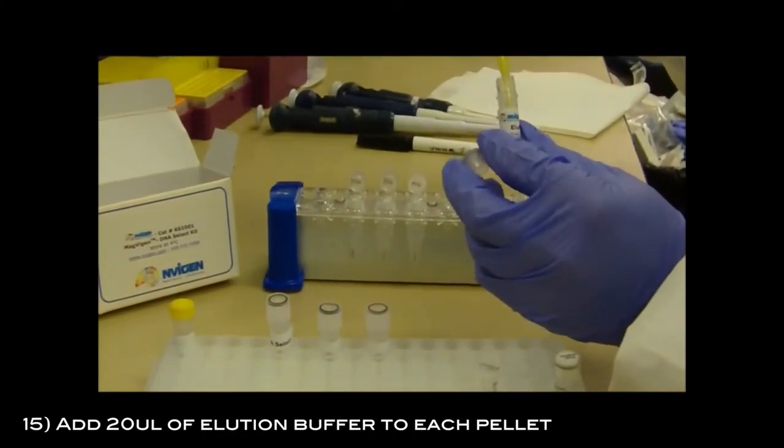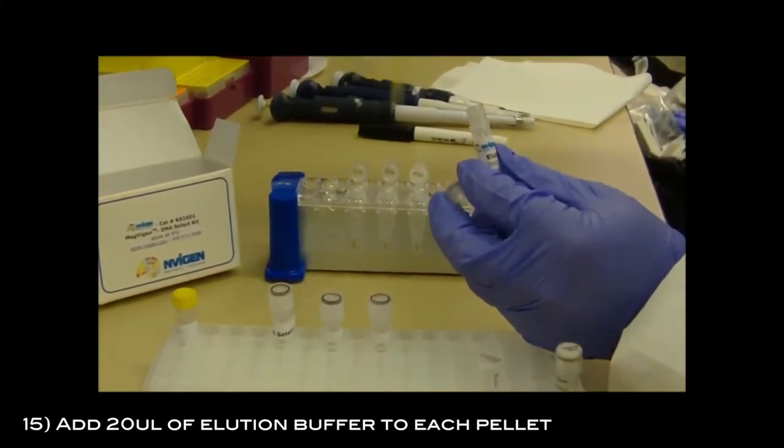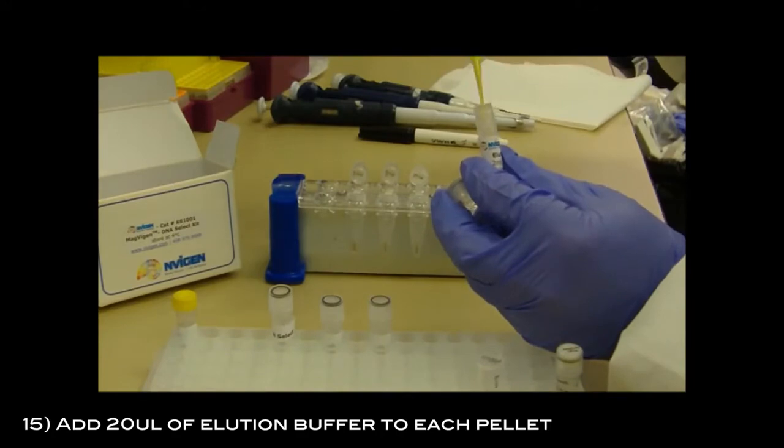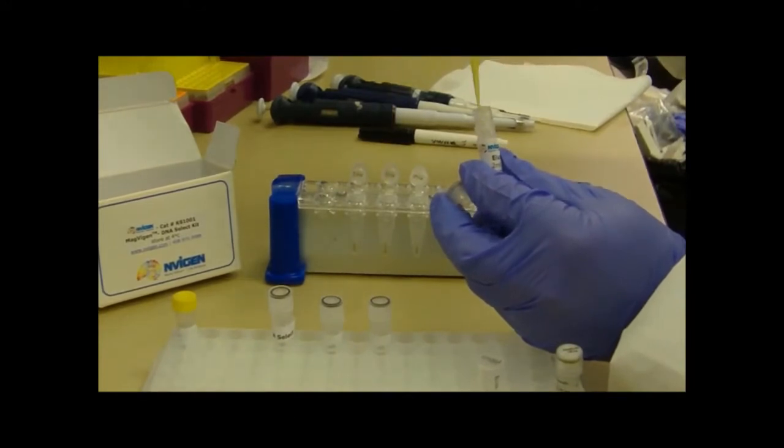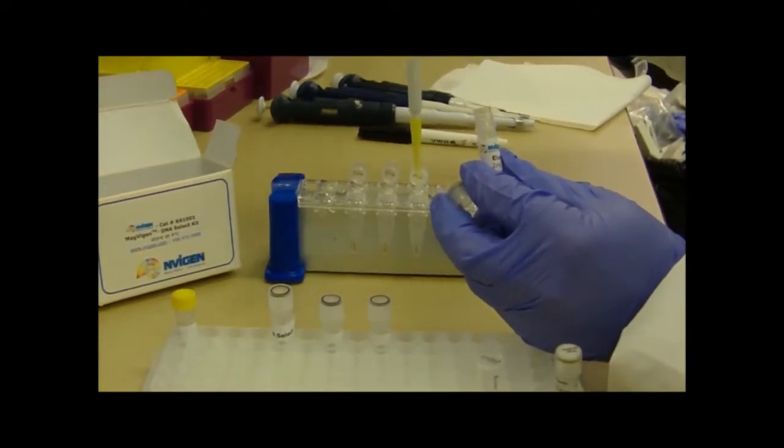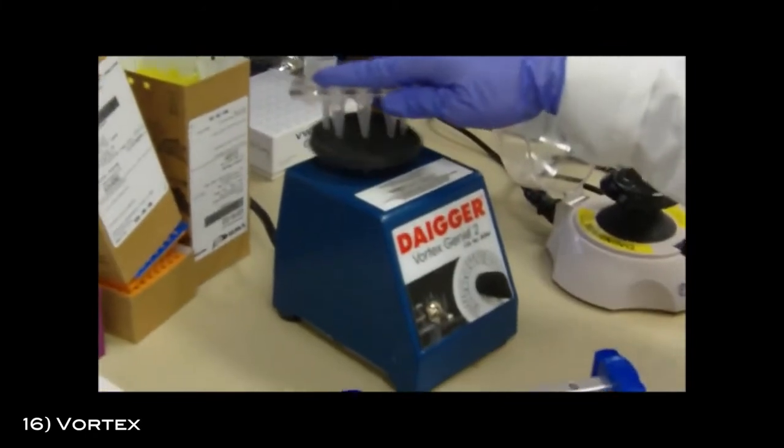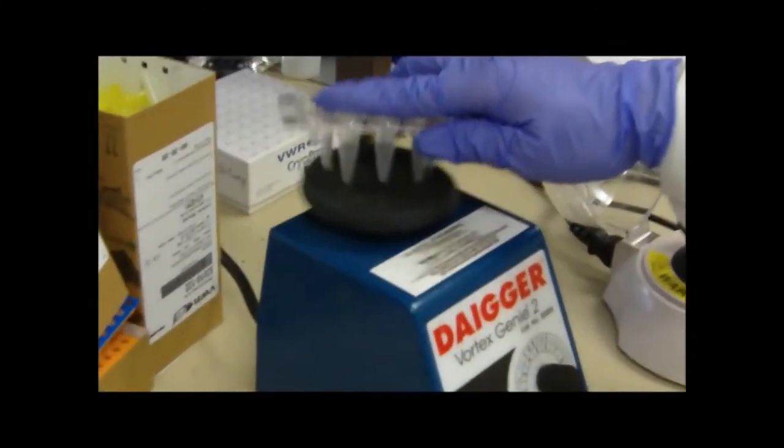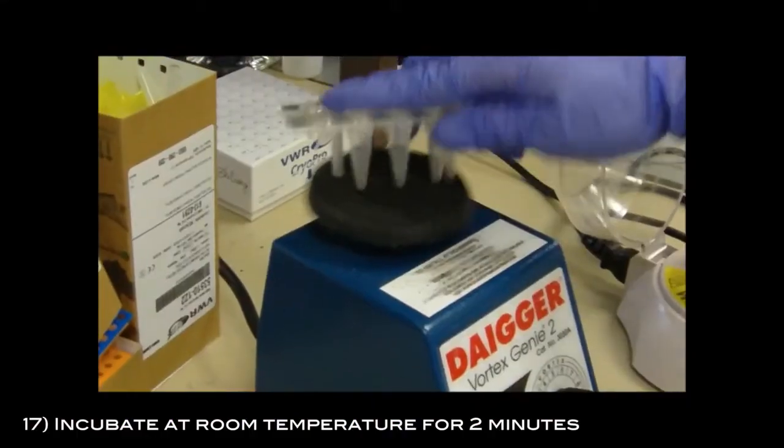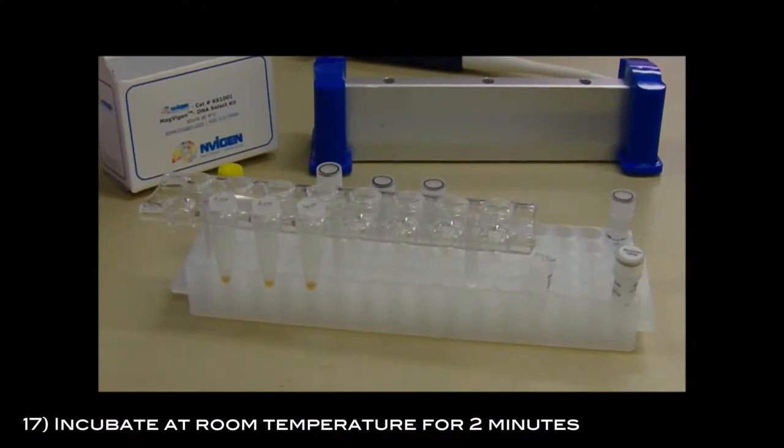Add 20 microliters of elution buffer to each pellet and vortex to mix well. Incubate at room temperature for 2 minutes.